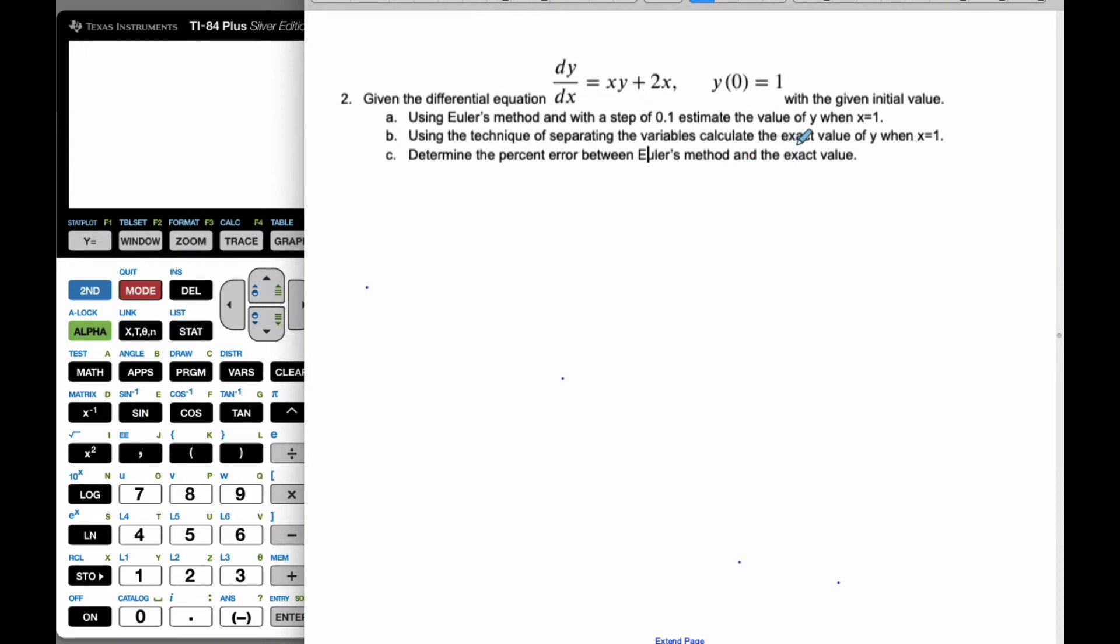Okay, so for this problem here, we are going to use Euler's method. And we know that Euler's method, I like to use the formula that says yn is equal to yn minus 1 plus h times f of xn minus 1 comma yn minus 1.